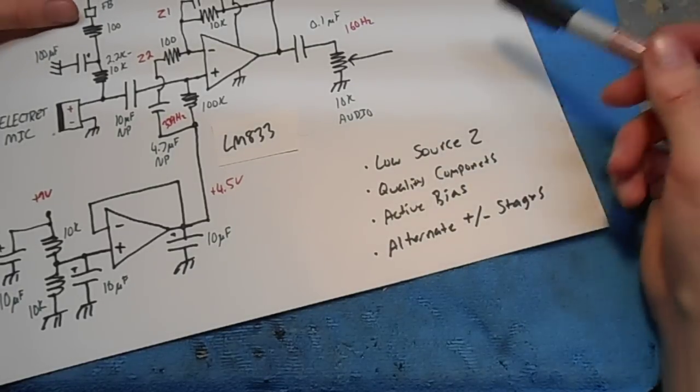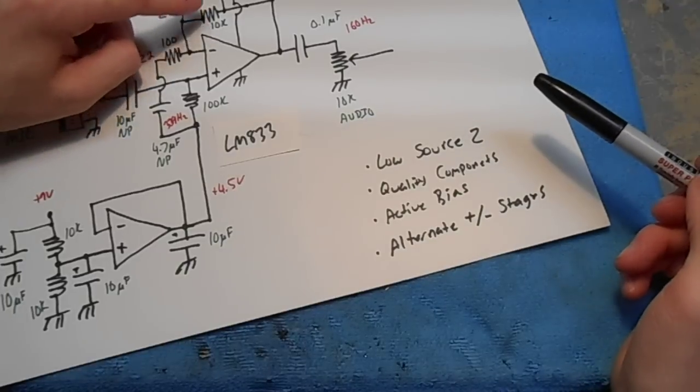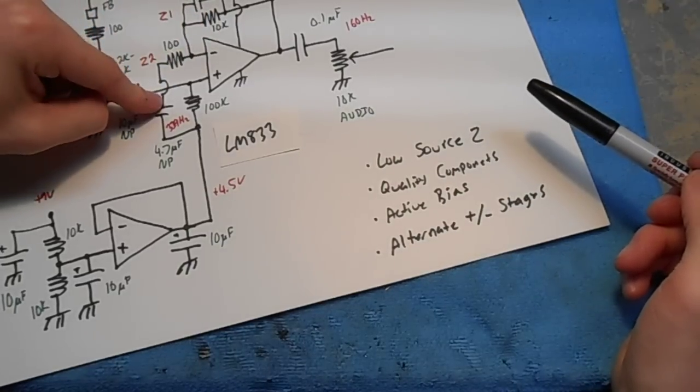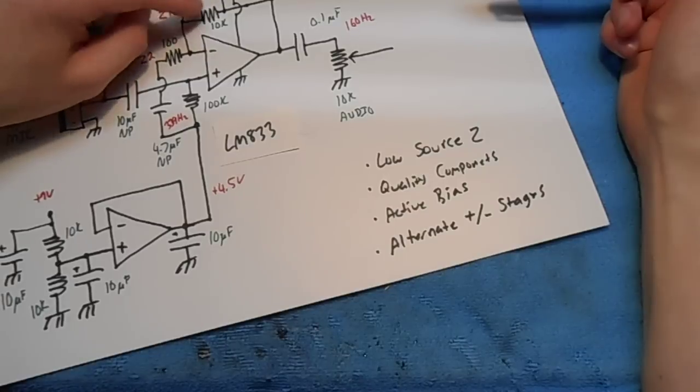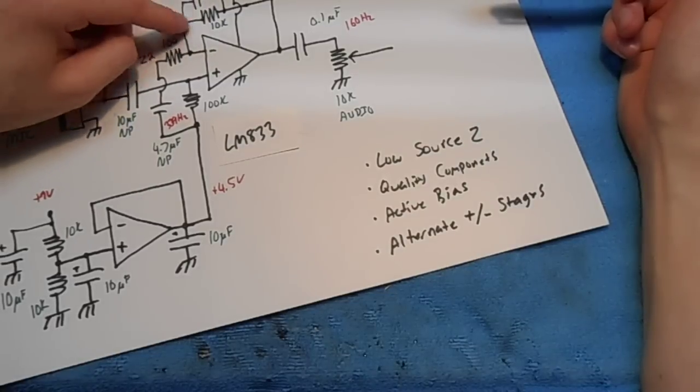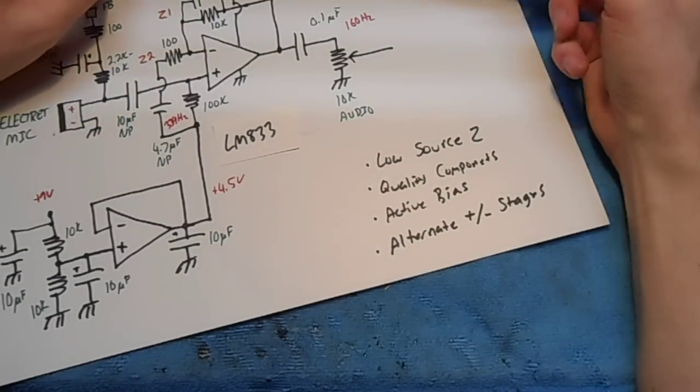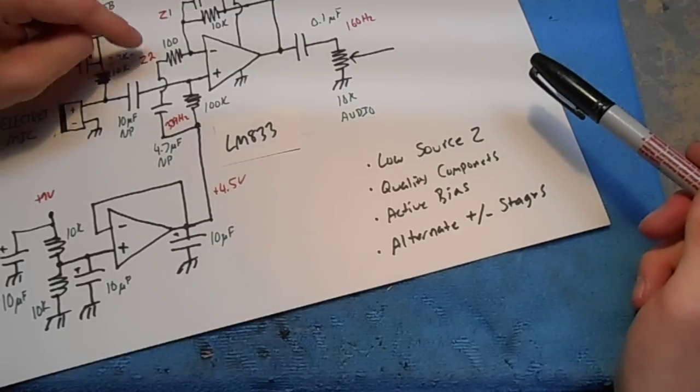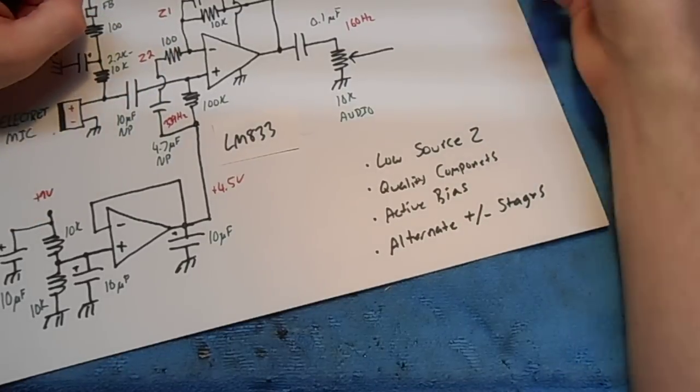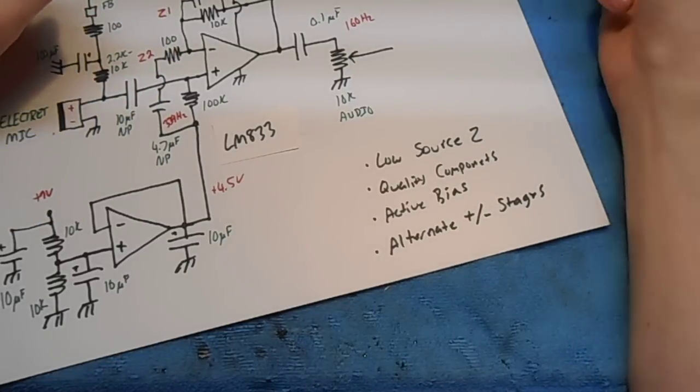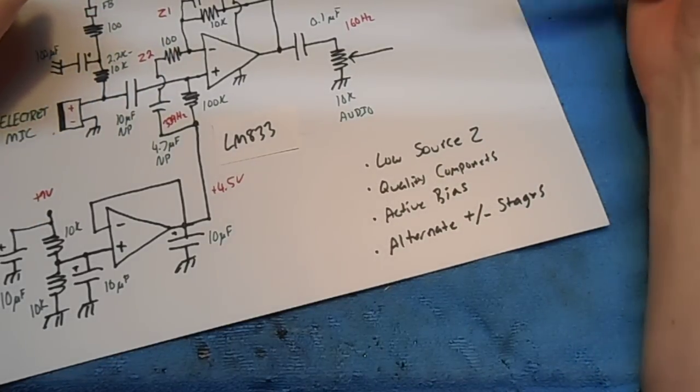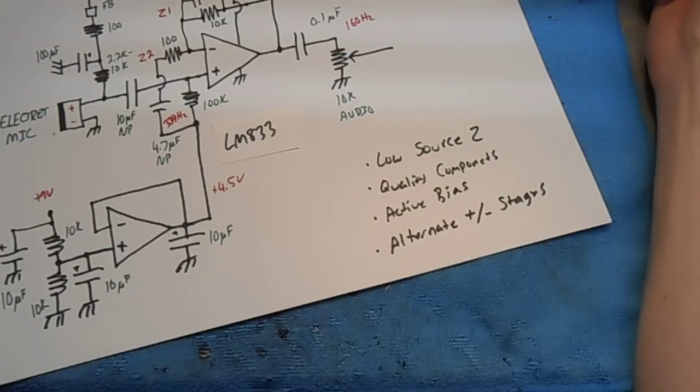Because we're using a parallel capacitor and a series capacitor, we have to use the impedance of these networks to figure out our overall gain. So we'll call this one Z1, this one Z2. Our gain would be Z1 divided by Z2 plus 1. Gain is the standard voltage gain for an op-amp.